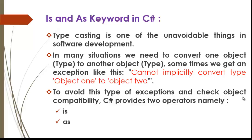Typecasting is one of the most unavoidable things in software development. In many situations we need to convert one object type to another object type, and sometimes we get an exception telling you 'cannot implicitly convert type object1 to object2.' In C-Sharp, to avoid or fix this exception, it provides two important and beautiful keywords: 'is' and 'as'.